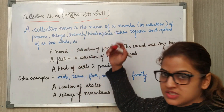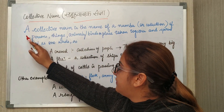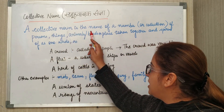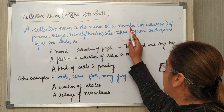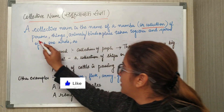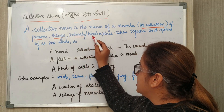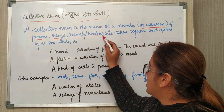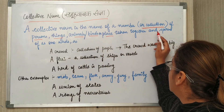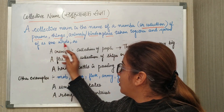Collective noun — Samo Vachat Sanghya. What is the definition? A collective noun is the name of a number or collection of persons, things, animals, birds or place taken together and spoken of as one whole.